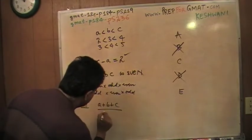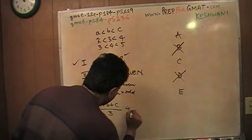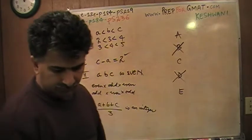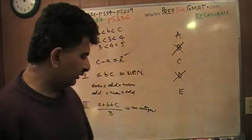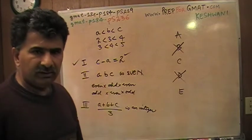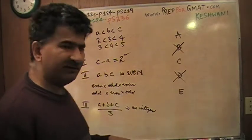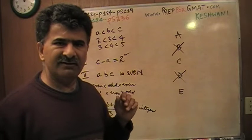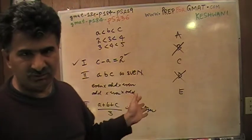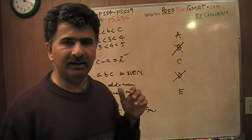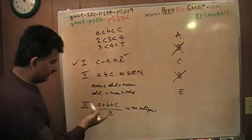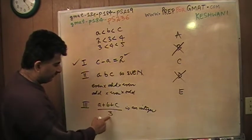A plus B plus C over 3 is an integer. Let's take a look at it. Even though statement number 2 is not unbelievably complicated, but why should I spend my time on it? I do the easier one first. Third statement seems easier to me. Easier in the sense that it's going to take me less time.